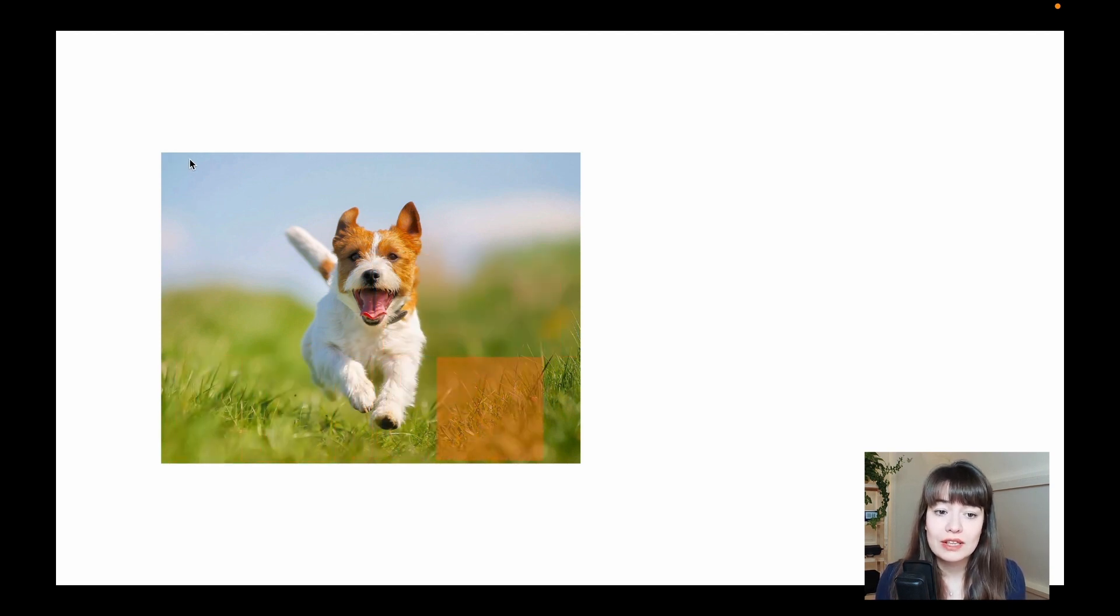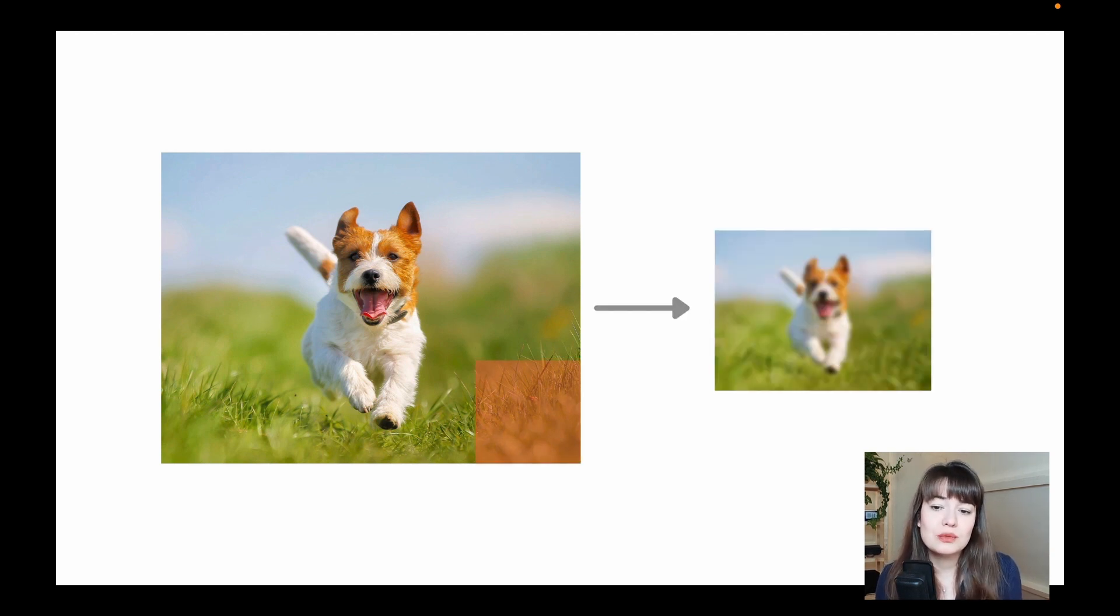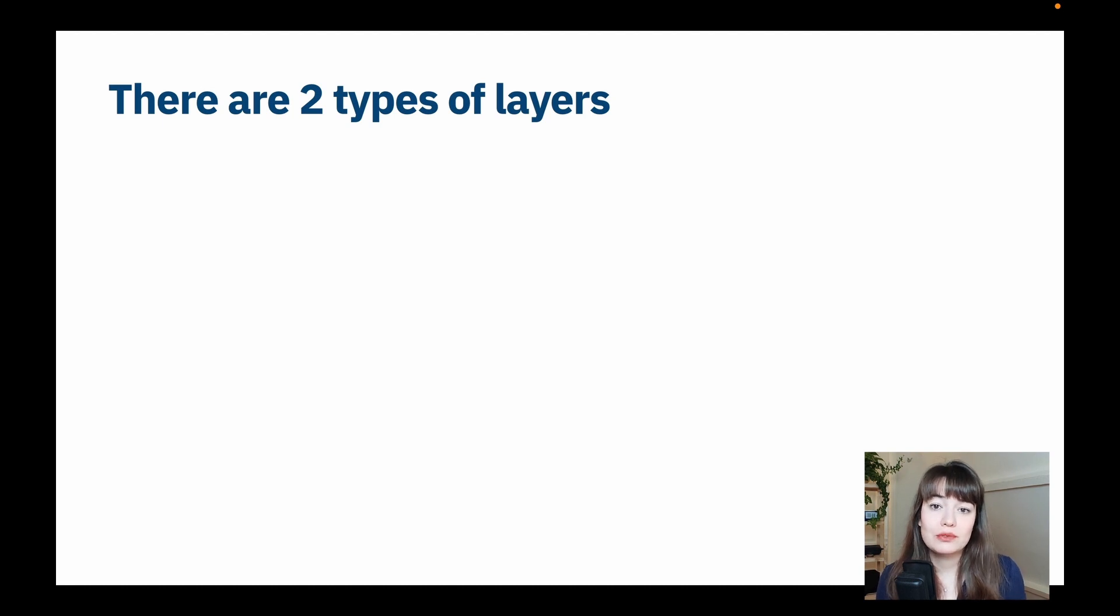and this square is actually taken through the whole image one by one, step by step. So by using just one small square of weights, so not one weight per pixel, but just enough pixels to fit in this little square, you will be able to analyze the whole picture. And by doing that, you create a smaller version or a slightly transformed version of this image, but we will see more about that in a second.